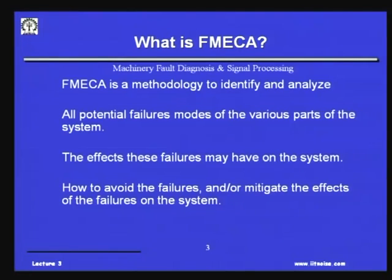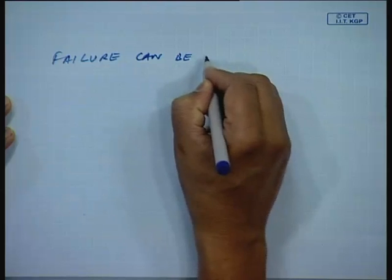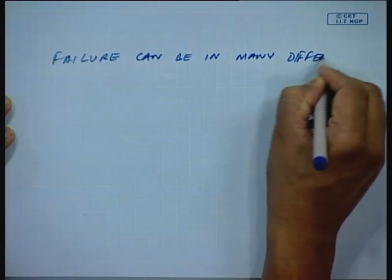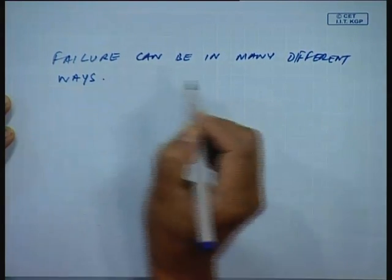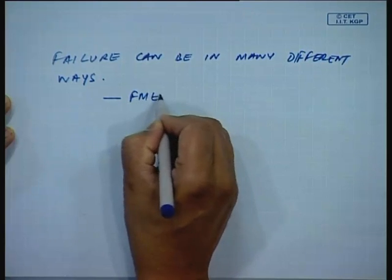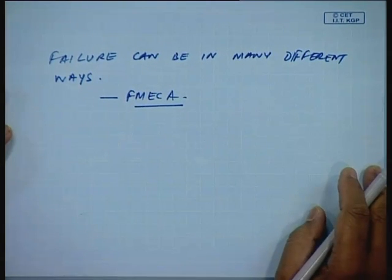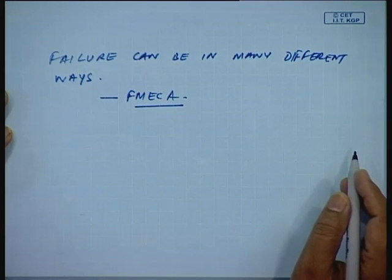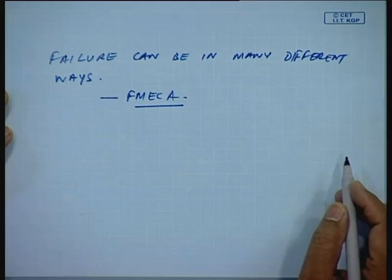To define FEMICA, it is a methodology to identify and analyze all potential failure modes of the various parts of a system. A system could fail in many different ways. FEMICA helps us decide which is a critical failure and which is a failure that is not critical — in the sense that it is not going to affect downstream operations as much as a critical failure.